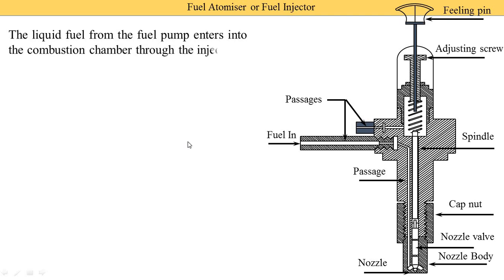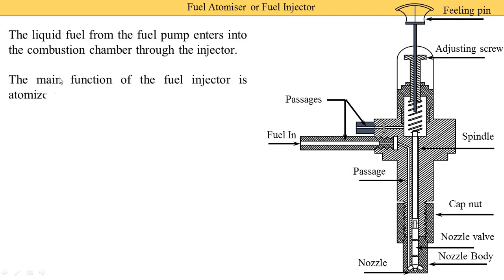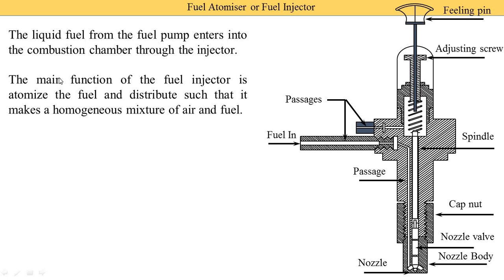The liquid fuels from the fuel pump enter the combustion chambers through the injectors — meaning between the engine cylinders and the pump, there is one component: the injectors. The main function of the fuel injector is to atomize the fuel and distribute it such that it makes a homogeneous mixture of air and fuel. In a diesel engine, after the end of the compression stroke, air is present and we spray the diesel. The diesel is atomized — divided into small droplets — then distributed throughout the whole combustion chamber, making a complete mixture of air and fuel, known as the homogeneous mixture, where the proportions of diesel and air are constant in every cylinder.